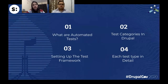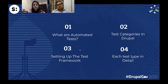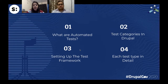Let's see what we are going to cover today. We'll be talking about what automated tests are, what are the different kinds of test categories that we have in Drupal, then how to set up the testing framework on our local machines so that we can run our tests, and then we will see each kind of test type in detail with examples.